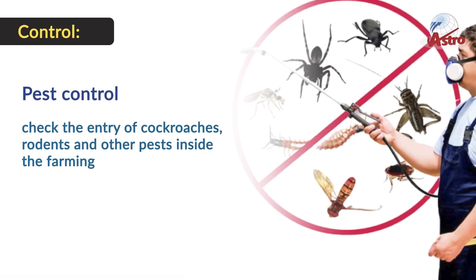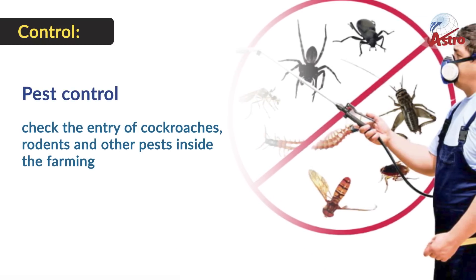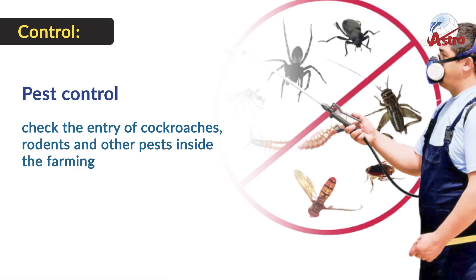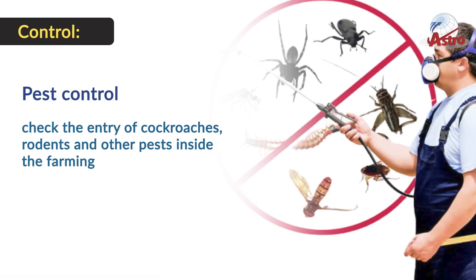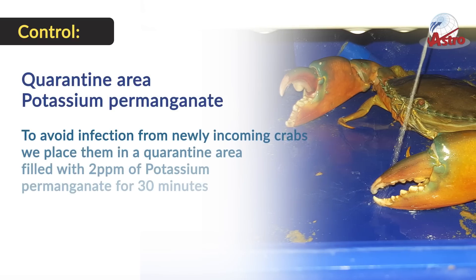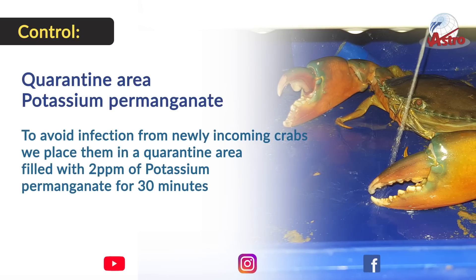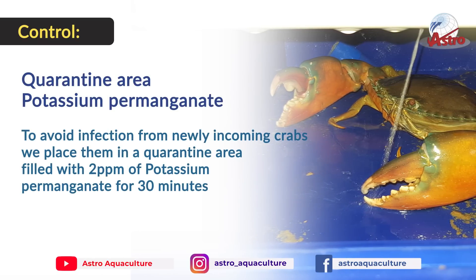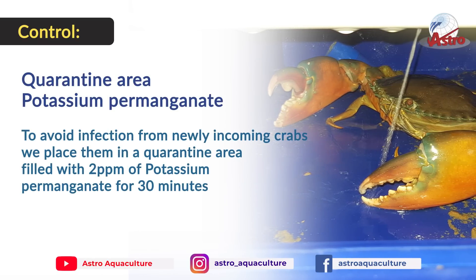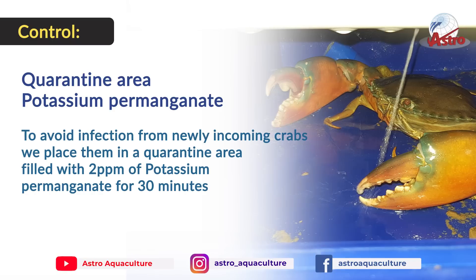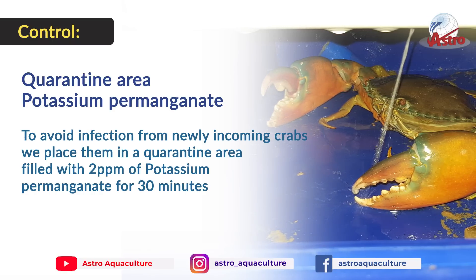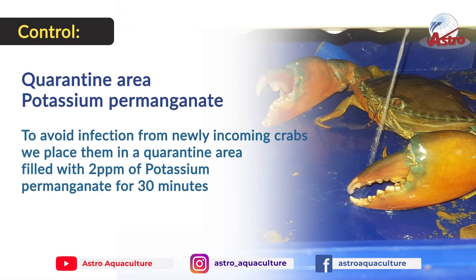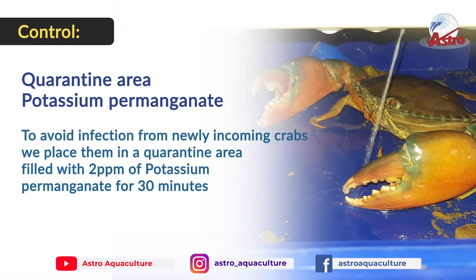Pest Control: Check the entry of cockroaches, rodents, and other pests inside the farming area. Quarantine Area: To avoid infection from newly incoming crabs, place them in a quarantine area filled with 2 ppm of potassium permanganate for 30 minutes.